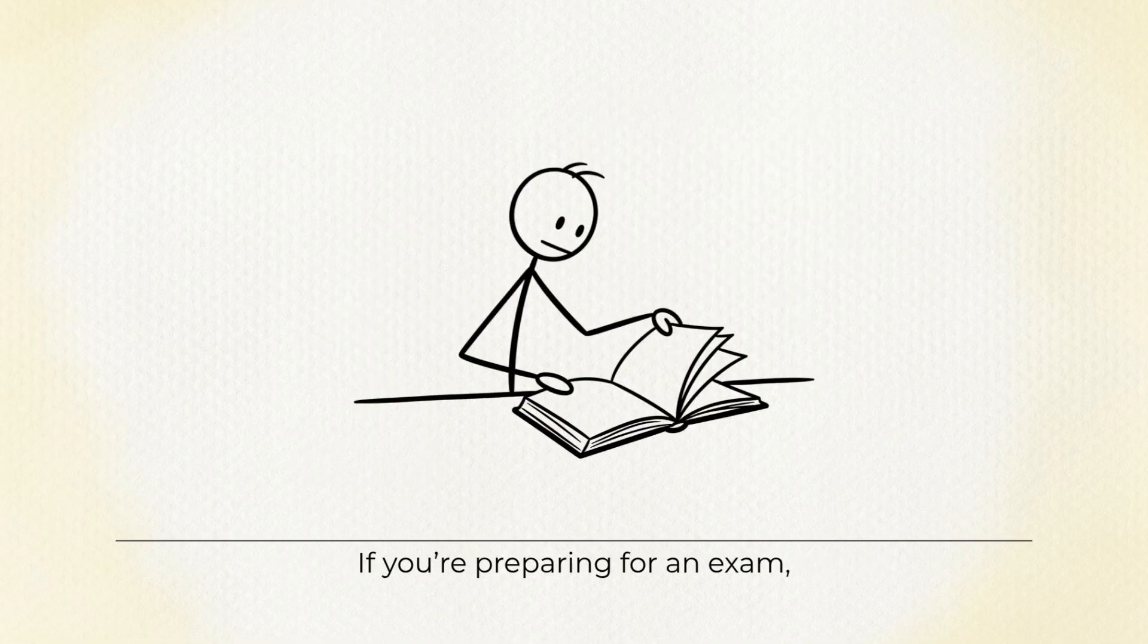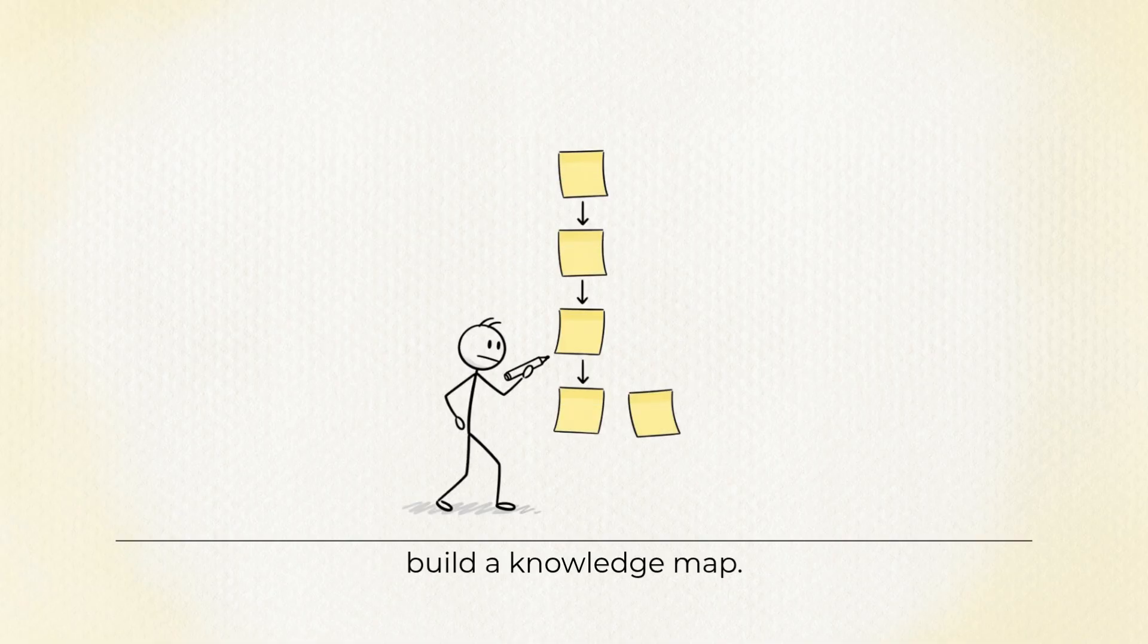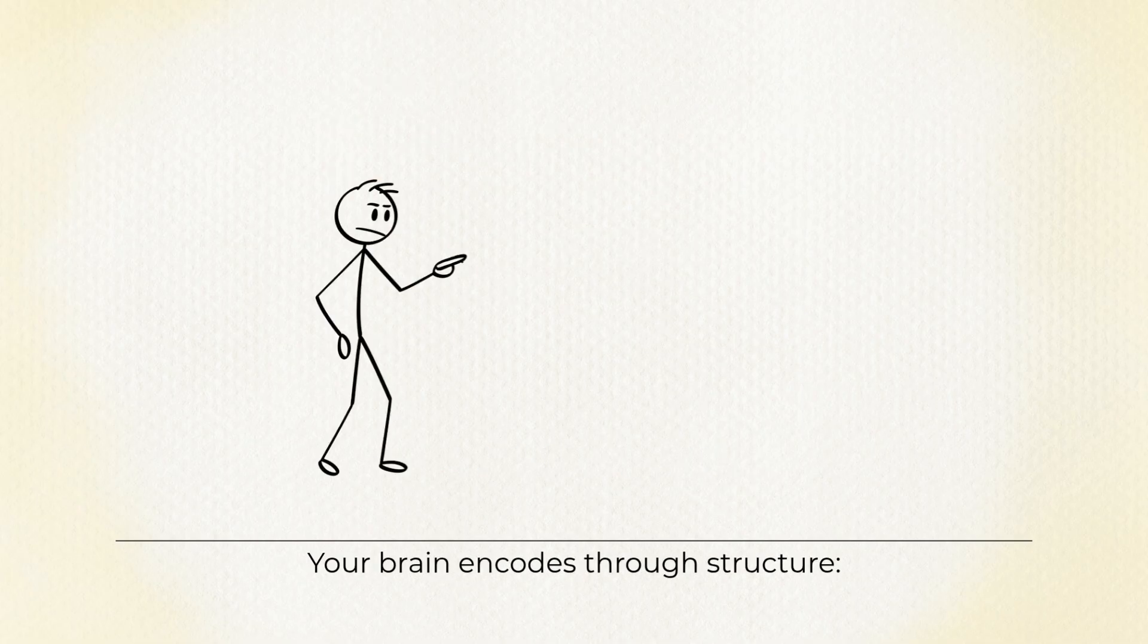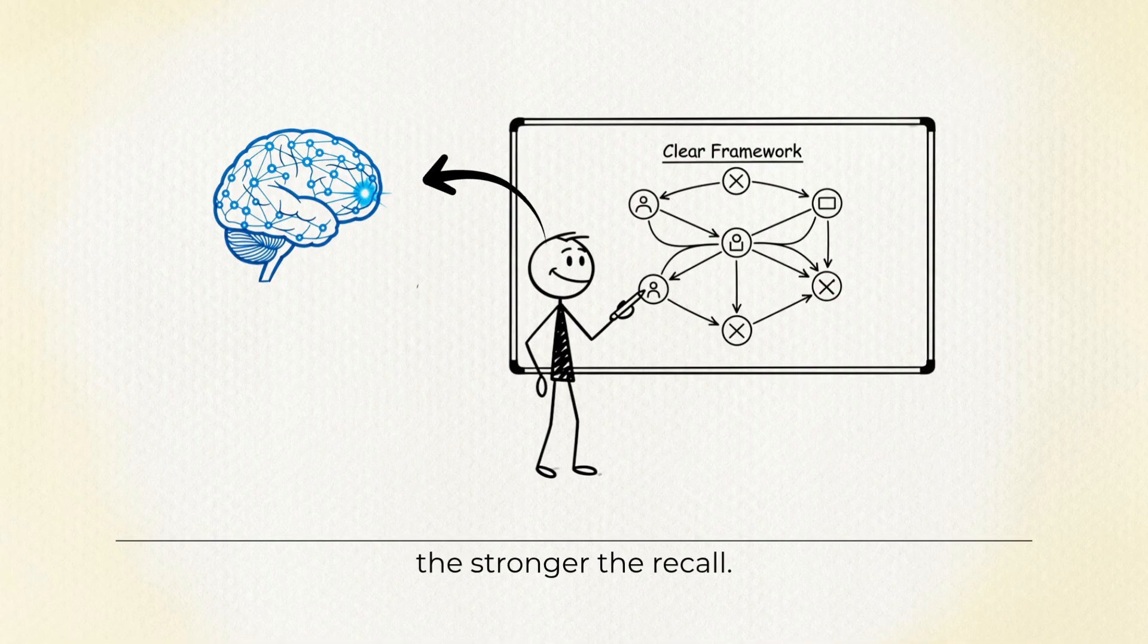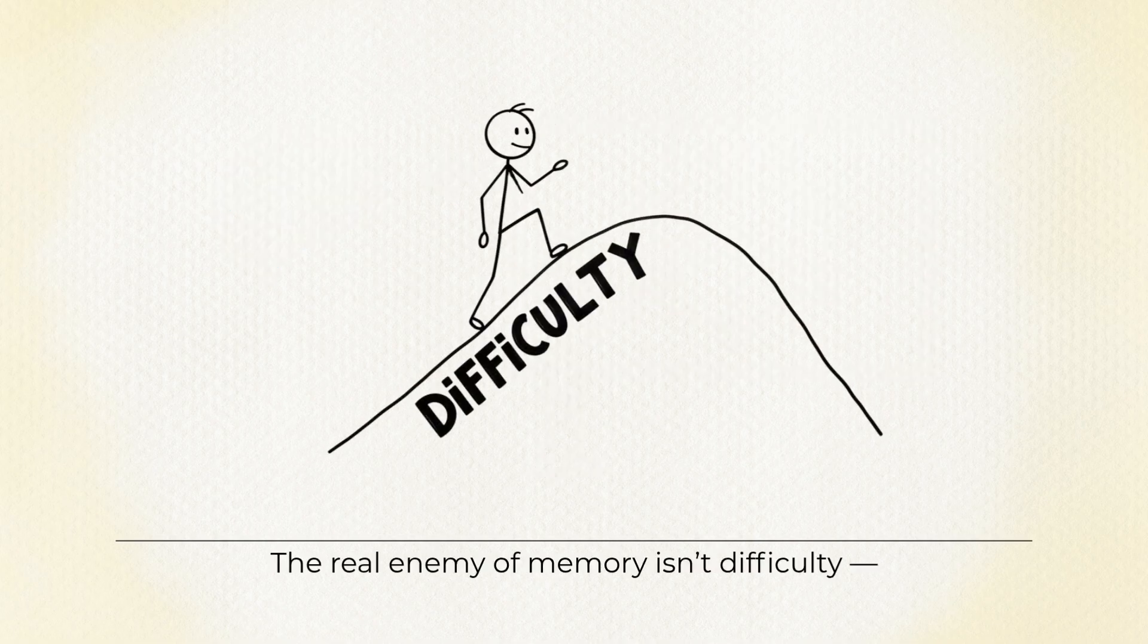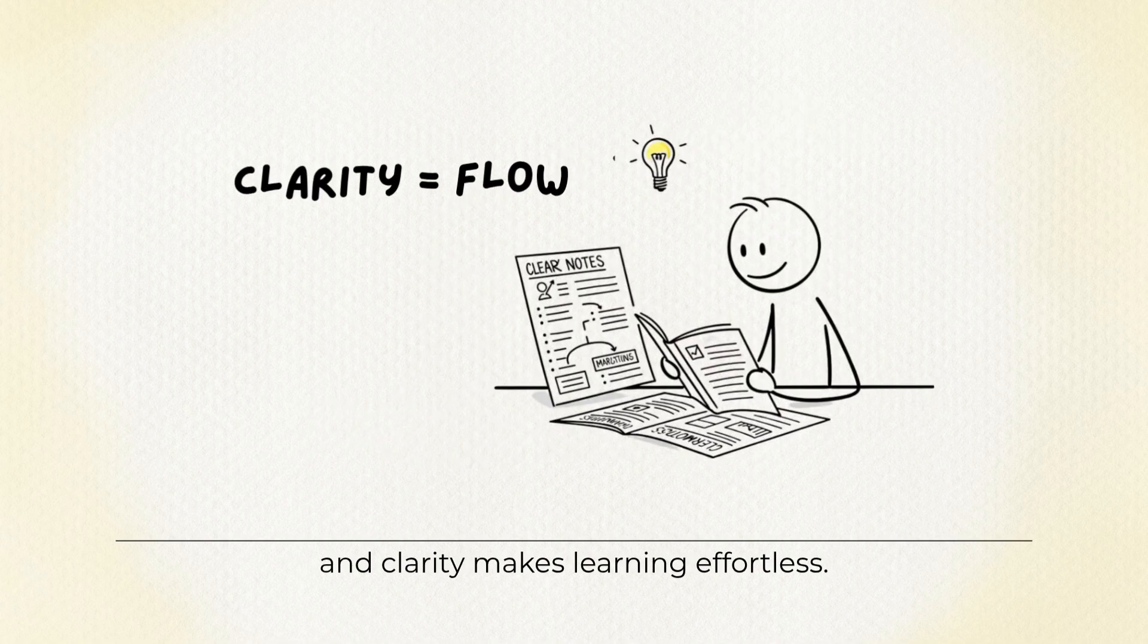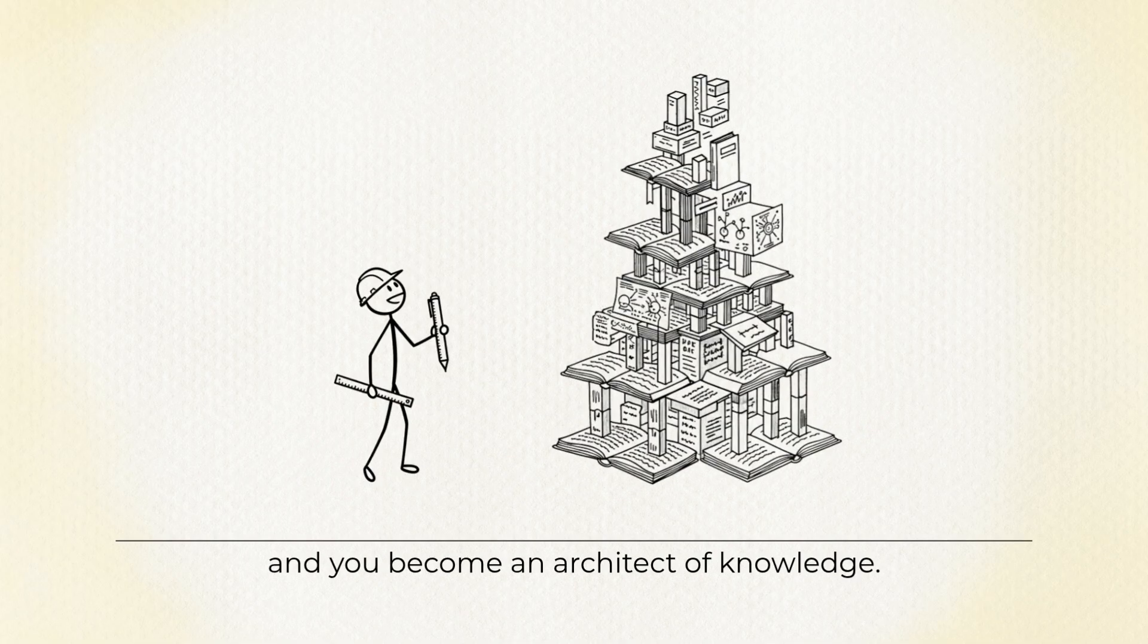If you're preparing for an exam, don't reread aimlessly. Build a knowledge map. List key questions and link ideas with color and shape. Your brain encodes through structure. The clearer the framework, the stronger the recall. The real enemy of memory isn't difficulty, it's disorder. Structure brings clarity, and clarity makes learning effortless. Build your own system, and you become an architect of knowledge.